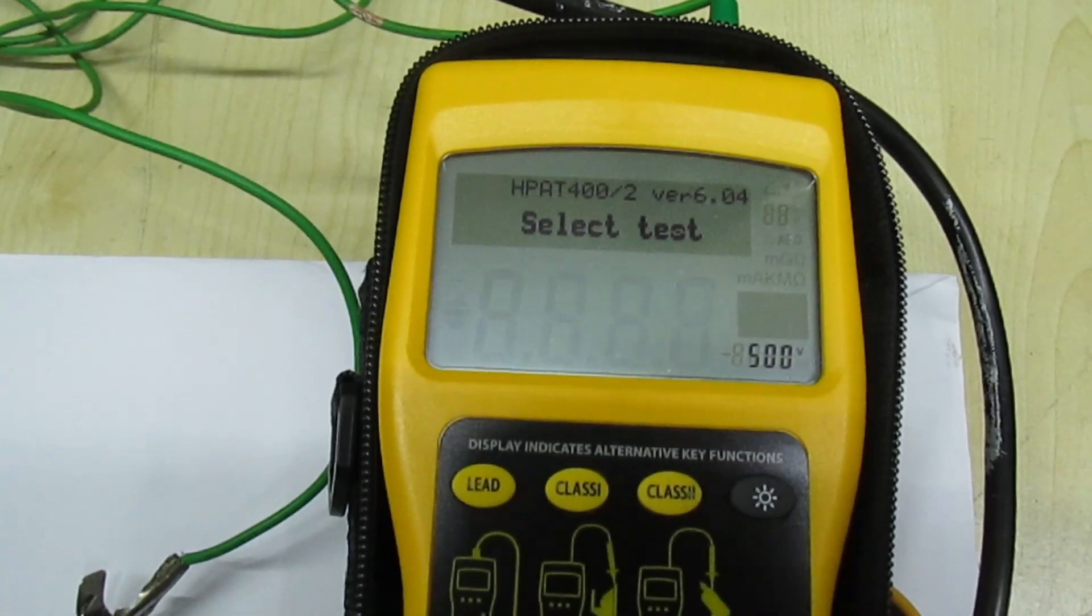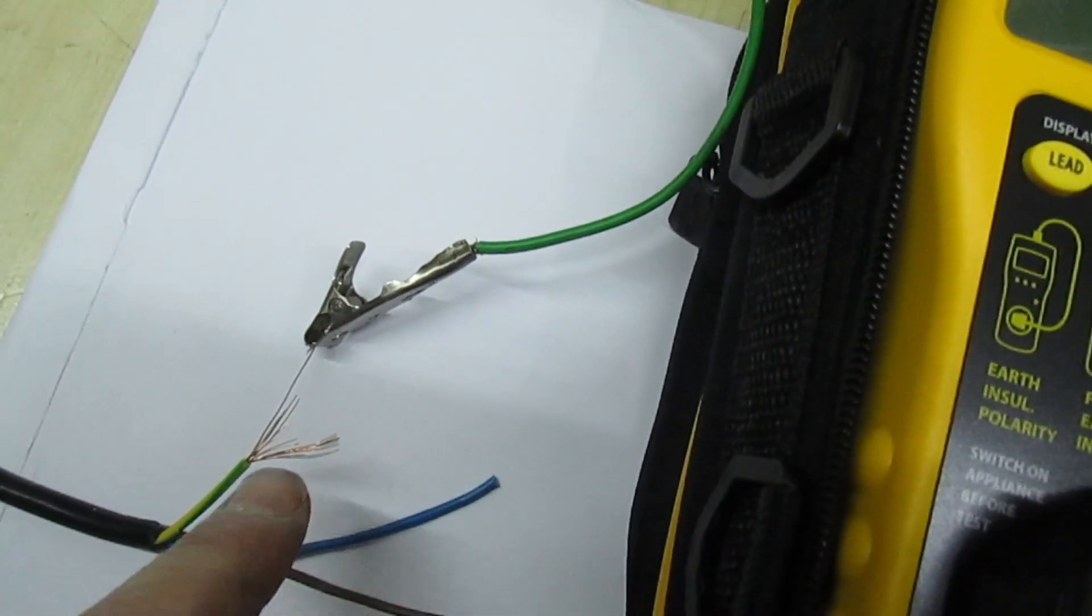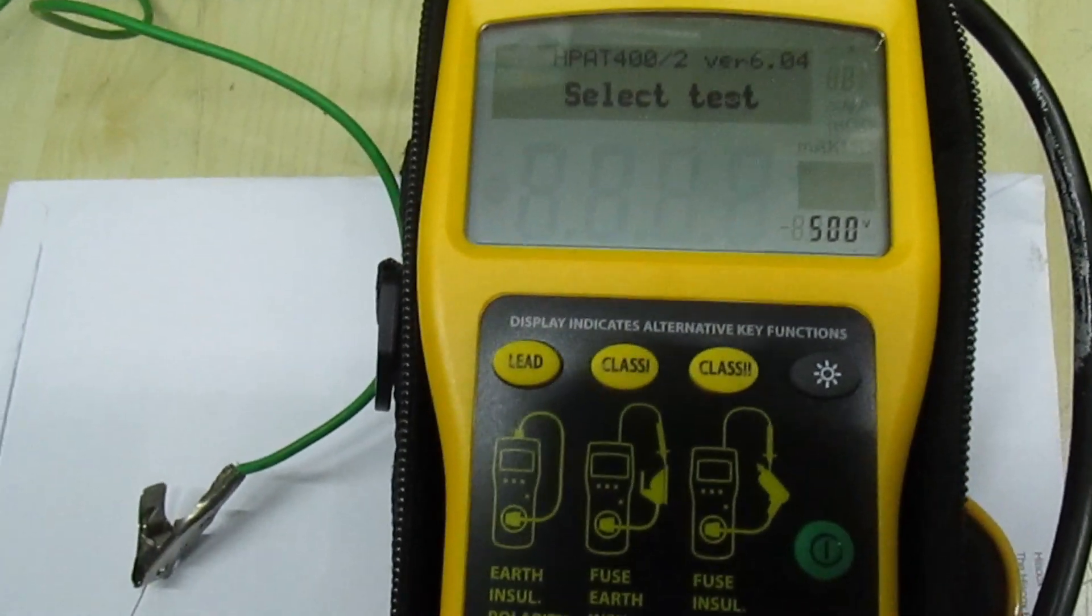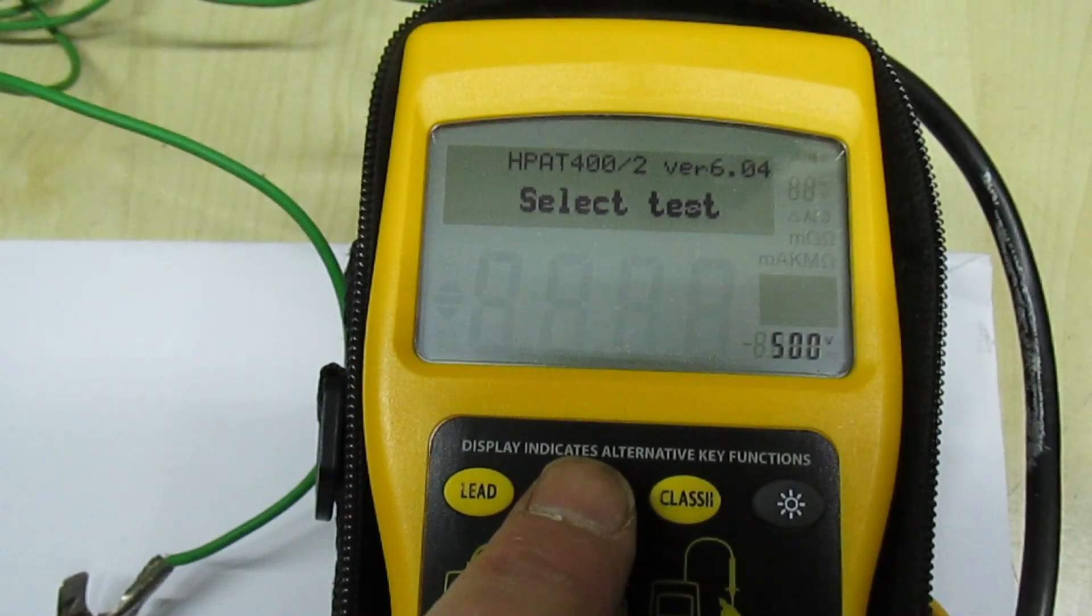We're testing at 500 volts, not that that's irrelevant because we're not actually testing resistance, we're just testing the earth integrity. So here we go, class one earth appliance, let's press the button and see what happens.